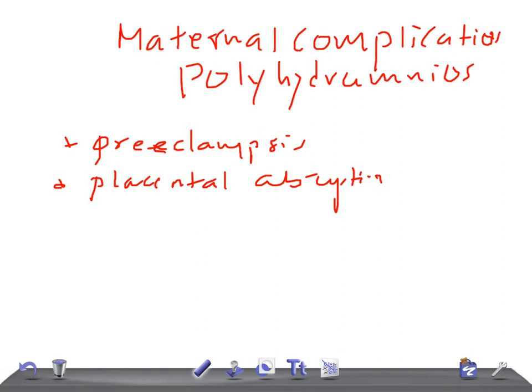Placental abruption is due to rapid decompression of the uterus when membranes are ruptured. Then you have cord prolapse, preterm labor, and postpartum hemorrhage.